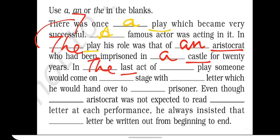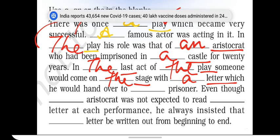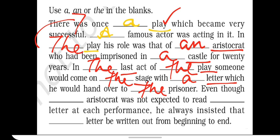So 'the last act of' — now what should we add here, THE or A? We should use THE because the play is already introduced in the very first line. Someone would come on the stage — in every play there will be one stage and we know which stage we are talking about, so 'the stage' — with a letter. Letter is first introduced, so 'a letter,' which he would hand over to the prisoner. Who is the prisoner? The aristocrat, and he is already introduced, so 'the prisoner.'